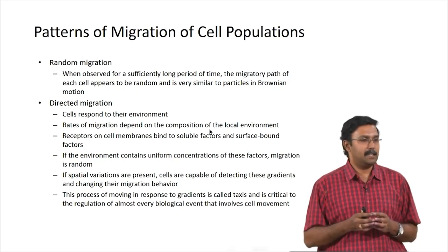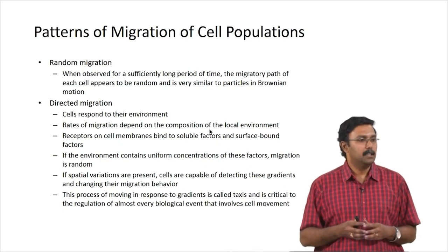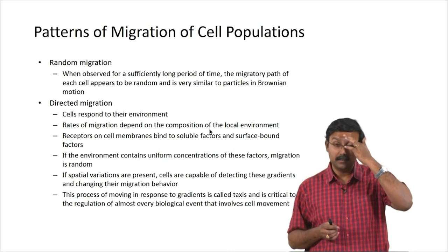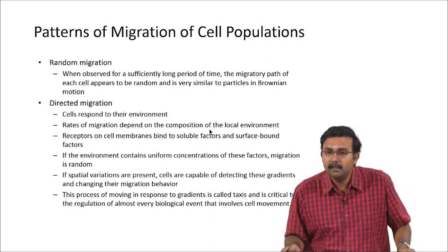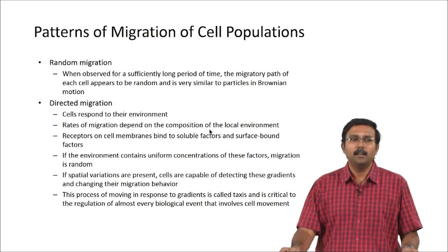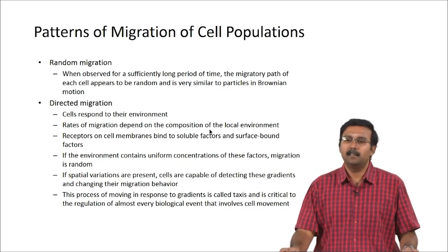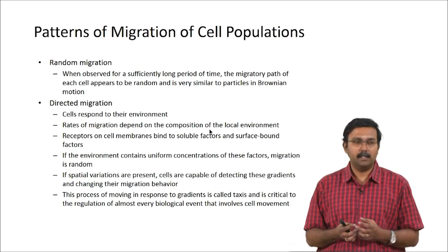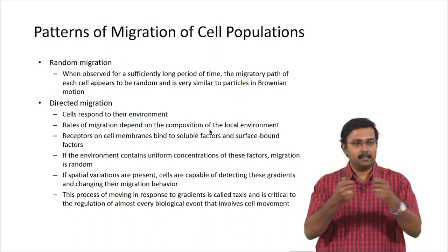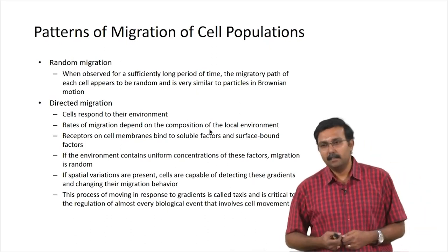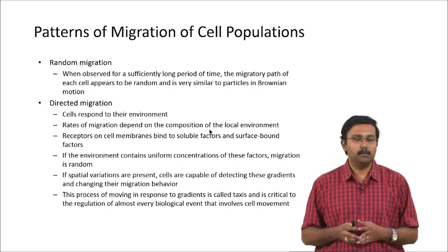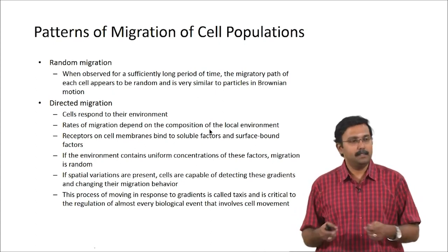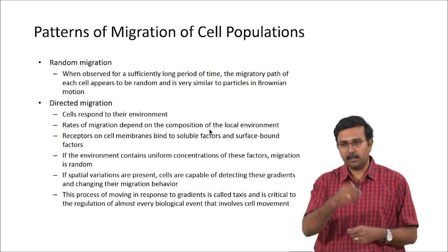In random migration, there is a term called Brownian motion — the movement of particles due to their own kinetic and internal energies and collisions, which cause changes in direction, making it random motion. Basically, Brownian motion is when a solute particle moves as a result of collisions and their own energies, with momentum transferred from one particle to another during collisions. If you observe random migration of cells for a long period of time and track them, it will look like Brownian motion because it will be quite random.